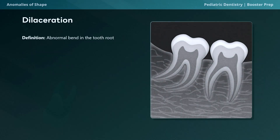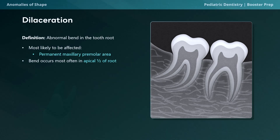The final dental anomaly we'll discuss today is dilaceration — an abnormal bend or curvature in the root of a tooth, typically occurring in the apical half. A common cause is trauma, particularly involving primary anterior teeth. Traumatic injuries such as intrusion, lateral luxation, or extrusion of primary teeth can affect development of the underlying permanent tooth. The permanent maxillary premolar area is most likely to be affected. Diagnosing dilaceration requires preoperative radiographs, and the condition poses significant challenges to root canal treatment due to the degree of bend.